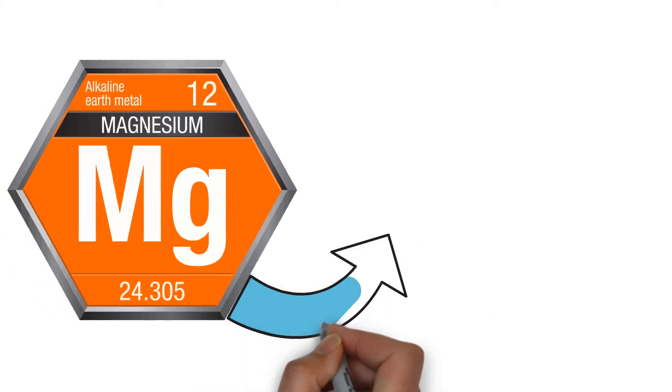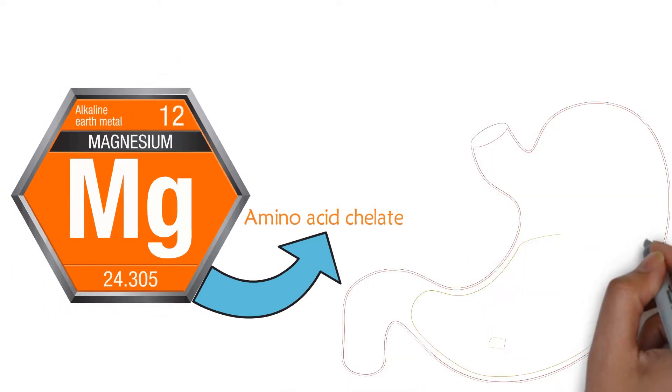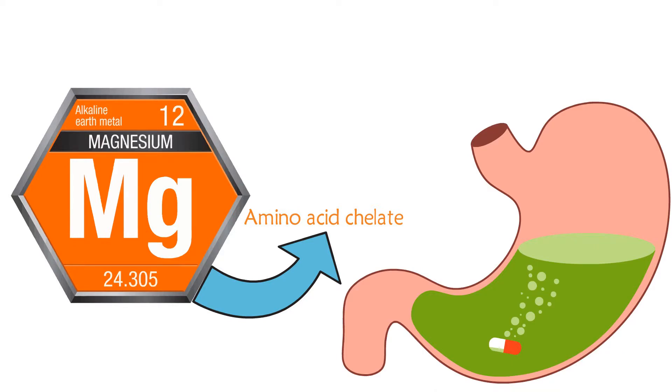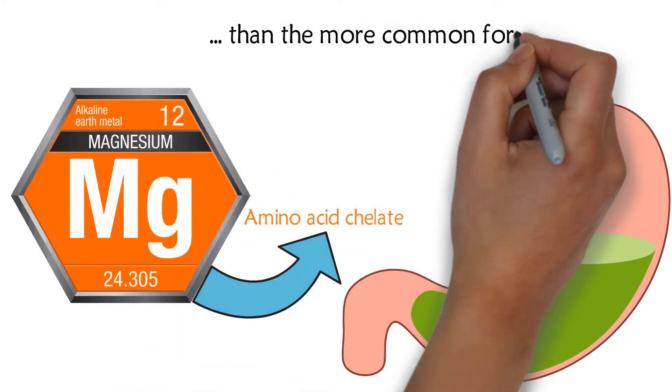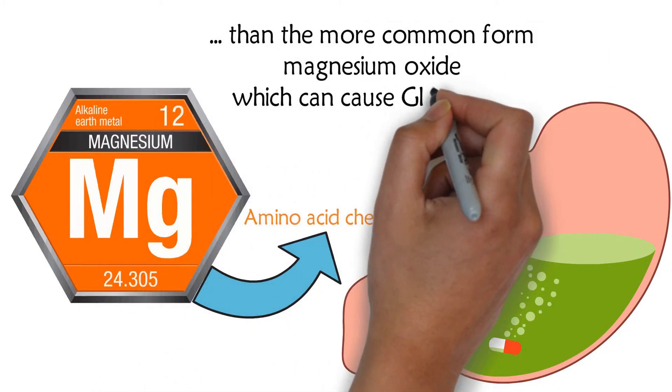Magnesium in the form of an amino acid chelate is a good choice, since it is both well tolerated and better absorbed than the more common form magnesium oxide, which can cause GI irritation.